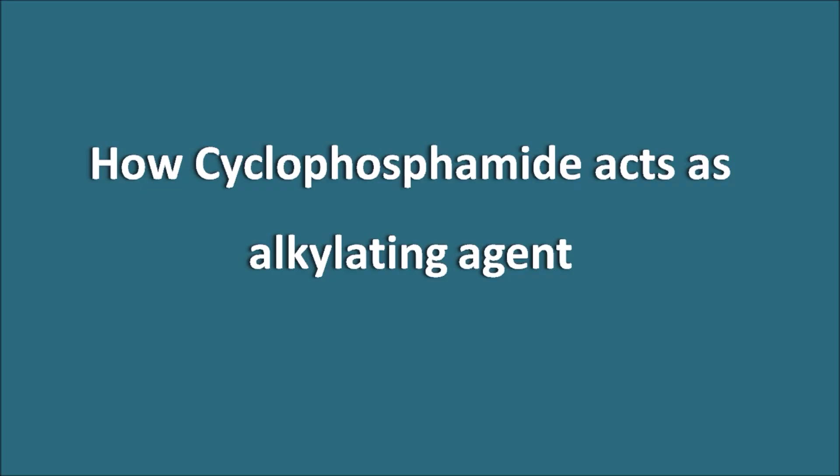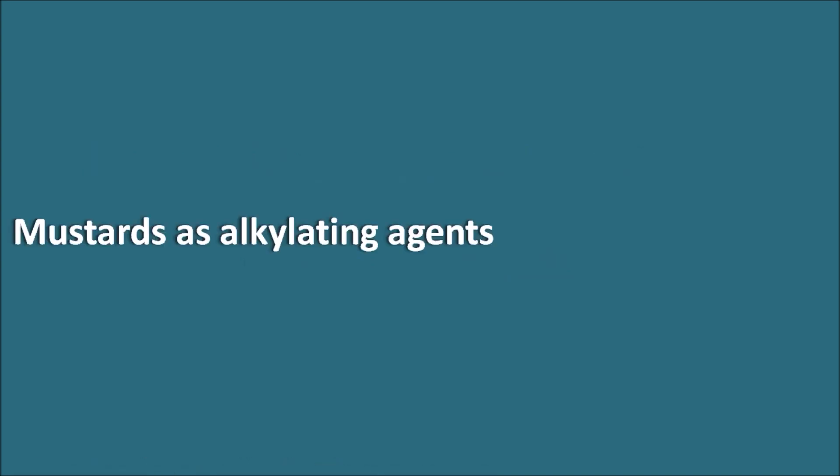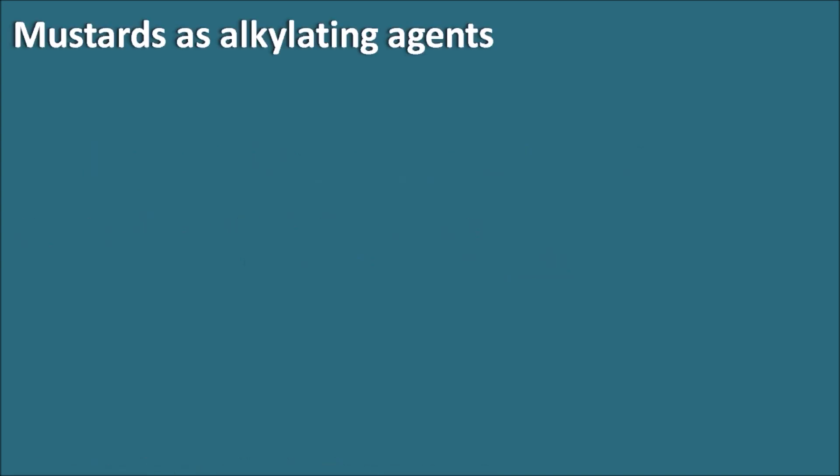How cyclophosphamide acts as an alkylating agent. Mustards act as alkylating agents. We have so many chemicals like nitrogen mustards and sulfur mustards which act like alkylating agents. Among these, the well-known group is the nitrogen mustards.